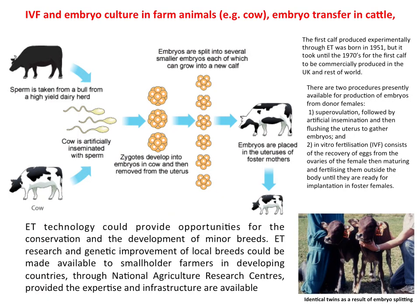It is also possible to perform embryo transfer in animals. This technique was developed before the embryo transfer technology in humans. The first calf produced experimentally through embryo transfer was born in 1951 in the USA, but it became famous in the 1970s. There are two procedures for embryo production from donor females in cattle: first, super ovulation followed by artificial insemination and then flushing the uterus to gather the embryos, which are then split into fragments; and second, in vitro fertilization, exactly like the IVF technique used in humans.